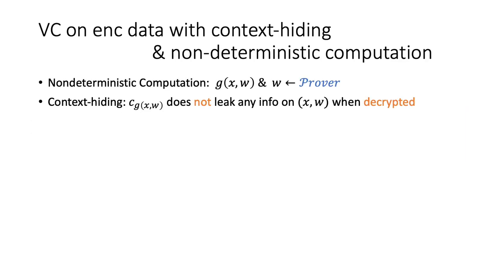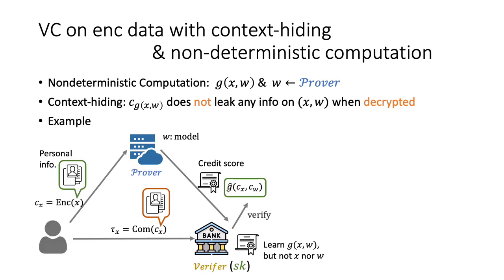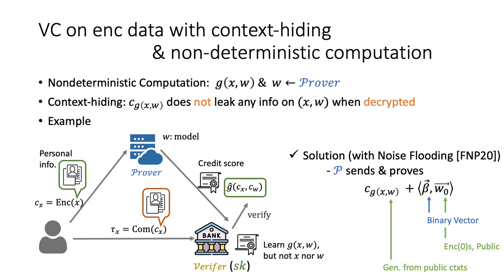Finally, I will give a short overview of our VC scheme for non-deterministic computation and context hiding. Non-deterministic computation means a computation where a prover can enter its additional input, and context hiding means that the decryption of a ciphertext does not leak additional information beyond the message it contains. These properties allow VC on encrypted data to be used in more diverse cases — for example, where the party preparing encrypted data and the party decrypting results are different. We provide a model for VC on encrypted data with homomorphic hash that encompasses non-deterministic computations, done by generalizing the previous work FMP20, which performed noise flooding using publicized encryptions of 0, then combining this with homomorphic hash.